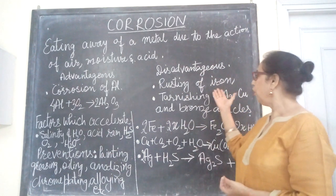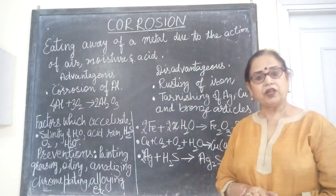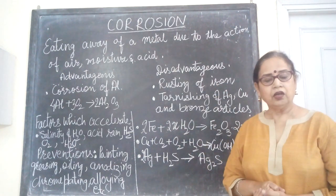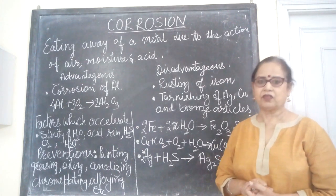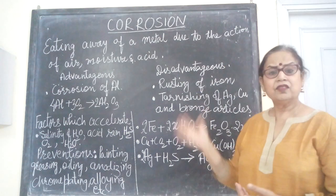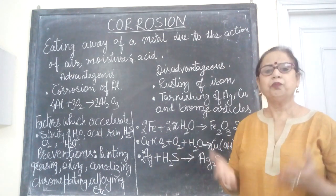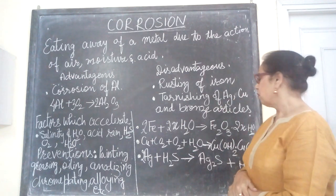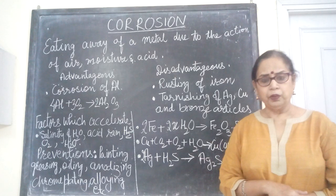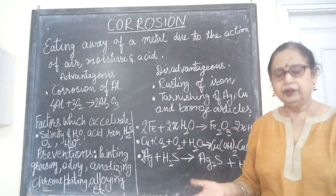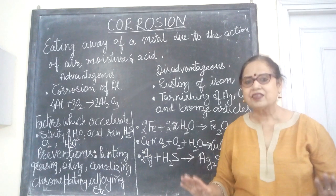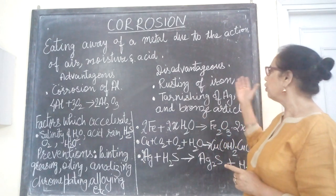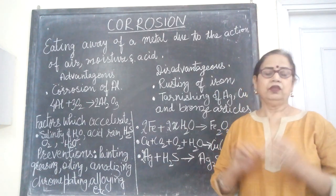Corrosion is disadvantageous when we consider rusting of iron. When iron reacts with water it forms hydrated ferric oxide, and the iron starts deteriorating, possibly leading to breakage. Other metals like silver and copper also get corroded, but the term 'rusting' is specifically used for the corrosion of iron and articles which contain iron in some form.